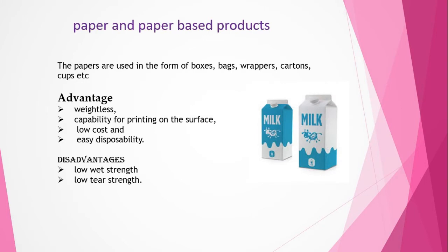The next conventional material used for packaging of milk is paper and paper-based products. Paper is basically cellulose-based and is used in the form of boxes, bags, wrappers, cartons, cups, etc. The main advantages are it is light in weight, it can be printed, it is of low cost, and it can be easily disposed. The disadvantage is that it has got low wet strength and low tear strength.